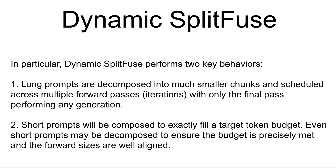For short prompts, Dynamic Split Fuse tries to combine them with other pieces to reach a specific target number of tokens to process at once. Even if a short text needs to be broken down further, Dynamic Split Fuse does this to perfectly match the target token count. This ensures each processing round is as efficient as possible, making the best use of GPU capability. In short, Dynamic Split Fuse optimizes model performance by breaking down longer text into smaller parts and combining shorter parts to hit an ideal number of tokens for processing.